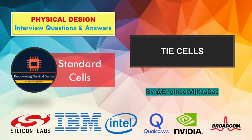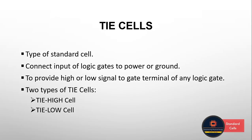Hi everyone, hope you all are doing good. Today I am back with another new topic: Tie Cell. In this video we are going to discuss Tie Cell. A Tie Cell is a type of standard cell that is used to connect the gate — the input of any logic gate — to either the power or ground network. This Tie Cell should be available on the standard cell library. There are two types: Tie High Cell, to provide a high signal to the gate of any logic gate, and Tie Low Cell, to provide a low signal to the gate of any logic gate.